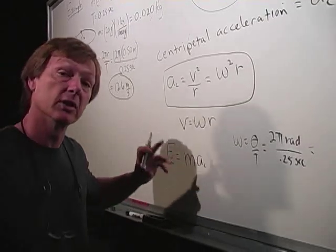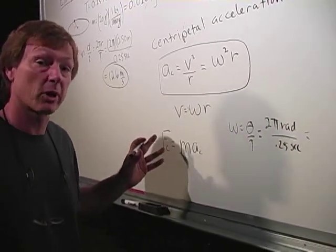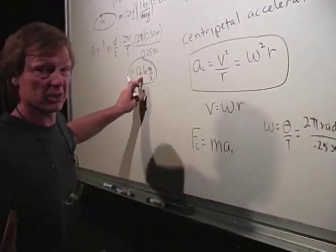So it's just another way to do it, and then you could use centripetal acceleration as omega squared r. But we've got velocity, so let's stick with that.